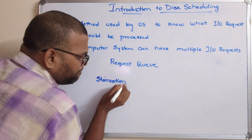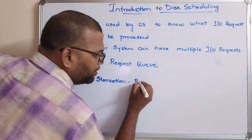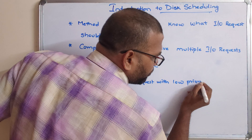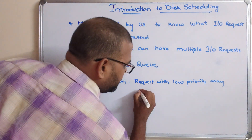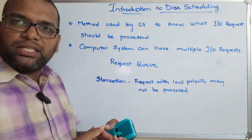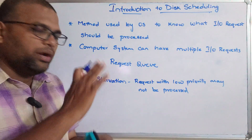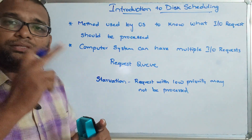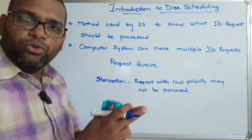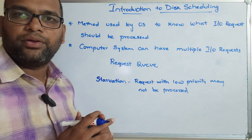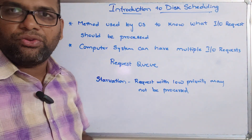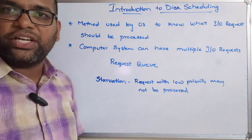Starvation means a request with lower priority may not be processed. If some requests are not being processed for a long period of time, we call it starvation. We should be careful that all requests are processed. An efficient disk scheduling algorithm will give no starvation. Now let us see the key terms used in disk scheduling and then list the different disk scheduling algorithms.